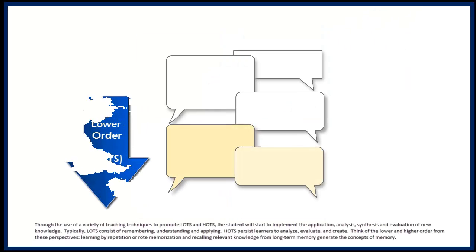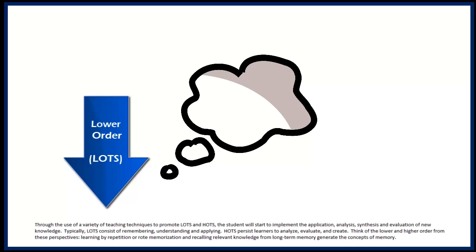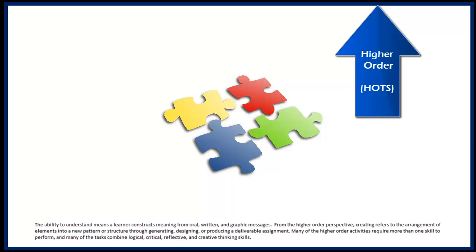Think of the lower order and higher order from these perspectives. Learning by repetition or rote memorization and recalling relevant knowledge from long-term memory generate the concepts of memory. The ability to understand means a learner constructs meaning from oral, written, and graphic messages. From the higher order perspective, creating refers to the arrangement of elements into a new pattern or structure through generating, designing, or producing a deliverable assignment.